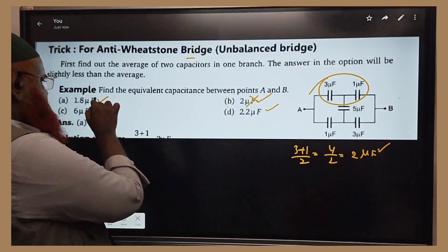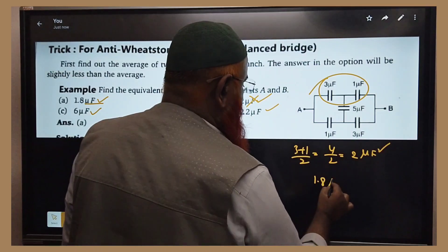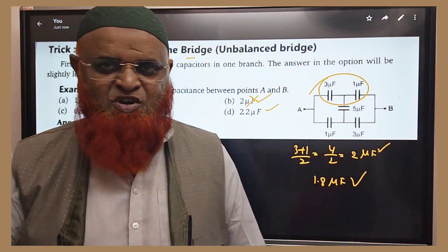That's why your answer is going to be 1.8. So your correct answer is going to be 1.8 microfarads. Hope you have enjoyed this shortcut. Thank you.